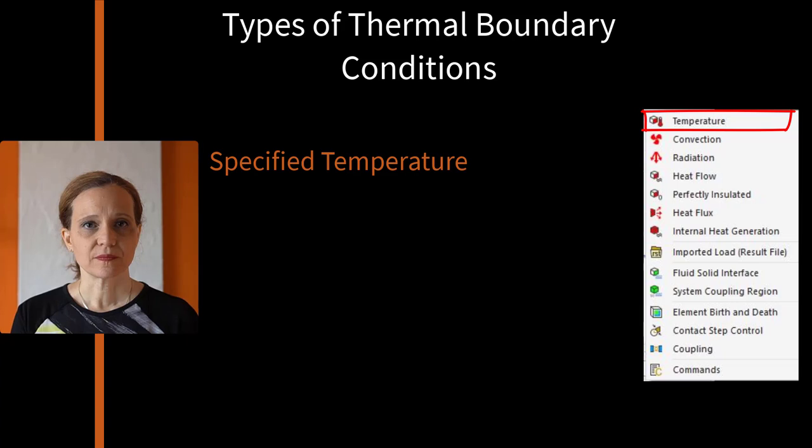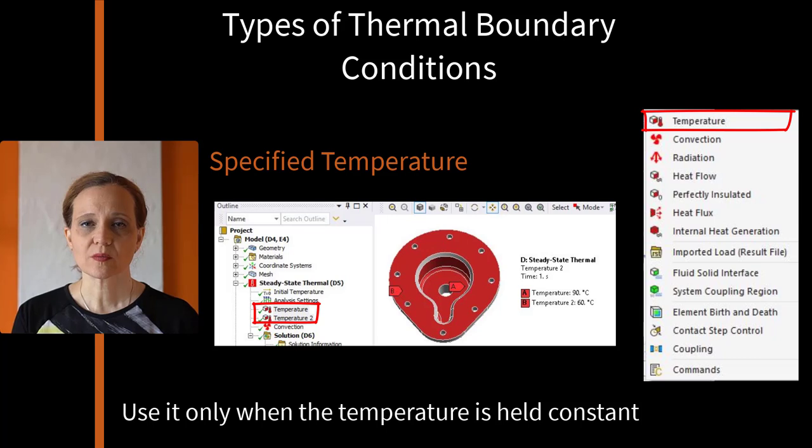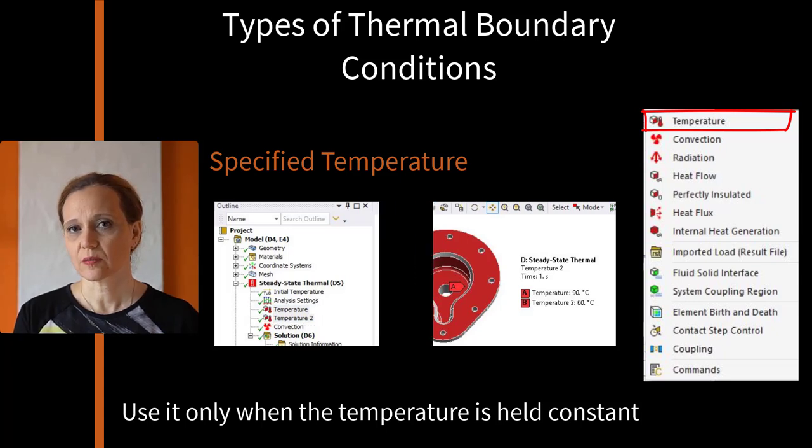Specify temperature. As we mentioned previously, temperature is the degree of freedom ANSYS solves for, thus constraining it makes the problem easier to solve. A simulation that has only fixed temperature boundary condition will always be bounded, and the user needs to verify if applying fixed temperature is a reasonable assumption. One should use temperature boundary condition only when the temperature is held constant, not to define a starting or estimated temperature.